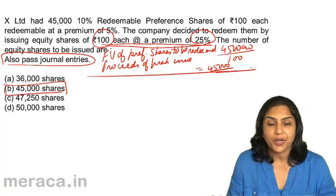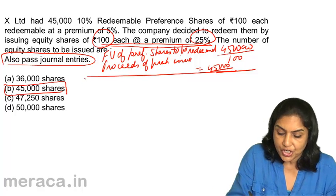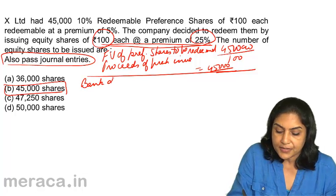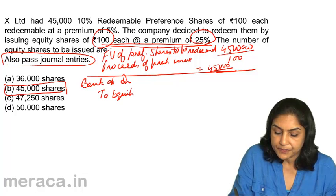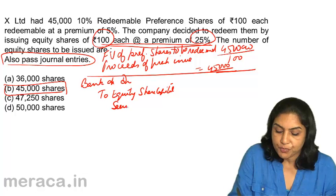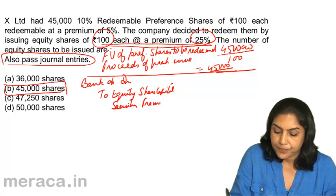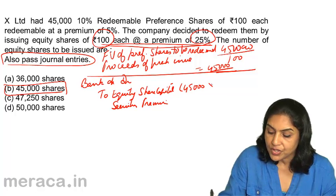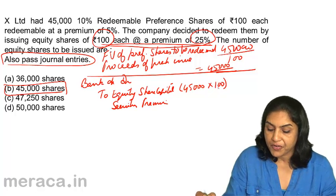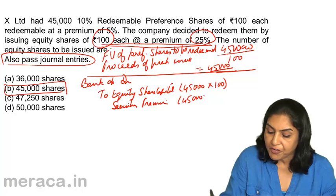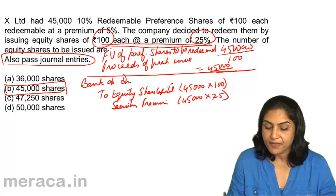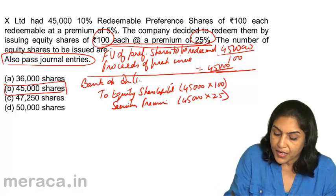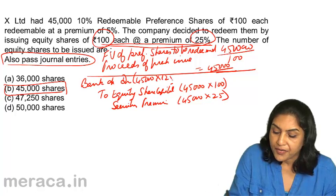So the answer is again 45,000 shares. The accounting entry for fresh issue is: Bank Account debit. Equity Share Capital credit, and Securities Premium credit. The amounts involved: Equity Share Capital is 45,000 × Rs. 100 = Rs. 45 lakh. Securities Premium is 45,000 × Rs. 25. And the total amount received is 45,000 × Rs. 125.